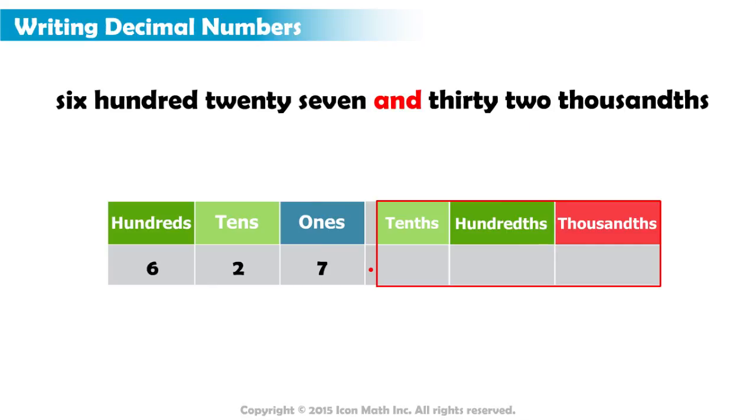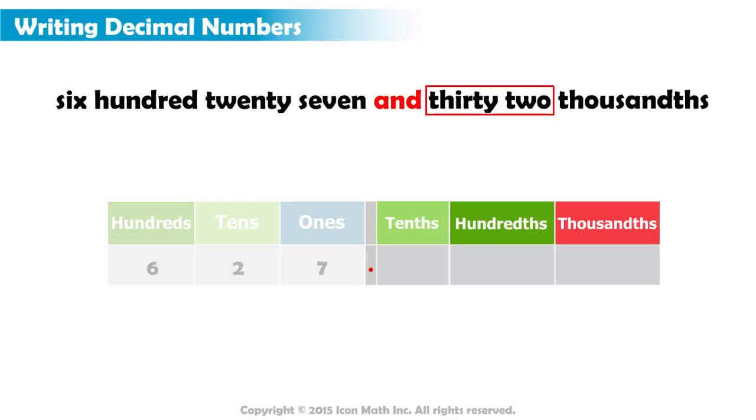What do we write in those places? Look at the words before the thousandths. They are read as 32. So we have to write 32 in those places. But we don't just write 32 anywhere. We need to represent exactly 32 parts out of 1,000. Suppose we write 32 immediately after the decimal point: 3 in the tenths place, 2 in the hundredths place, and leave the thousandths place empty.